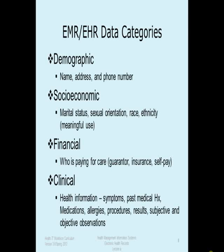What are some of the categories of data in the EMR and EHR? They can be defined in four categories. First is demographic — very specific patient information: their name, date of birth, phone number. Then we have socioeconomic, and sometimes these two can overlap. Socioeconomic, if you break that word apart, is their social status — whether they're employed, their marital status, where they live, their race, religion, sexual orientation. All of these cultural factors are very important.